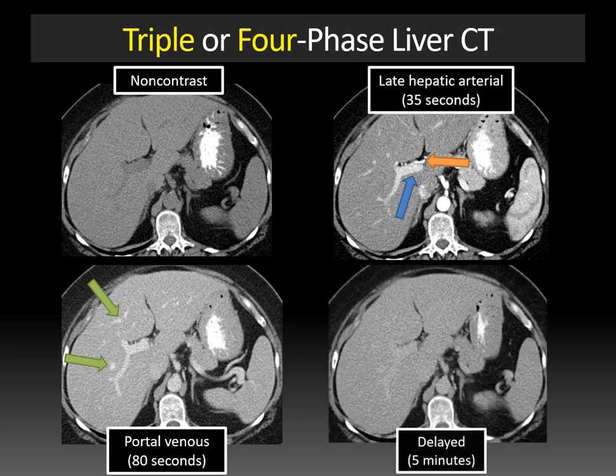Finally, we have the delayed or equilibrium phase, which usually starts around four to five minutes and can continue to 10 minutes. At this point, contrast starts to leak out of the liver, and everything starts to fade out a bit.